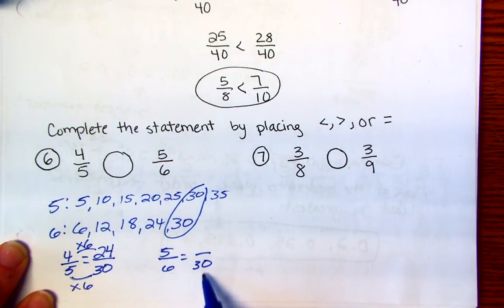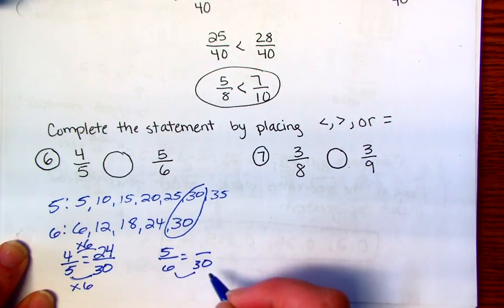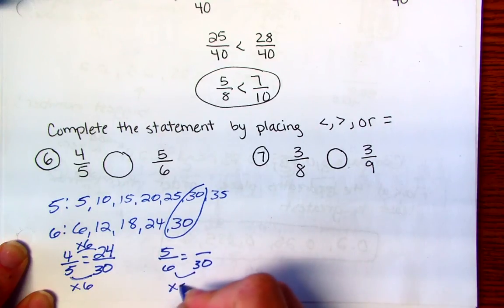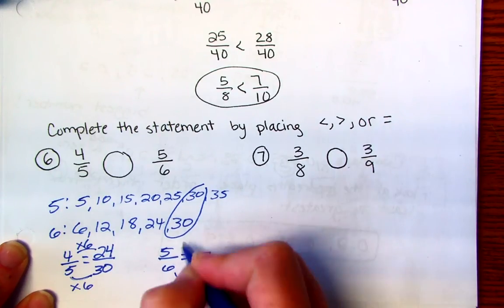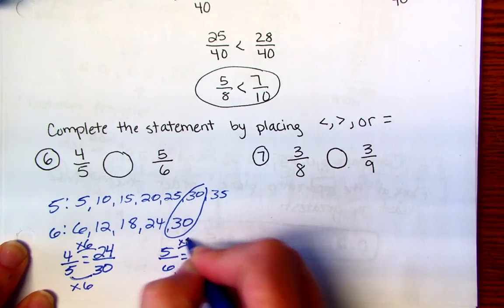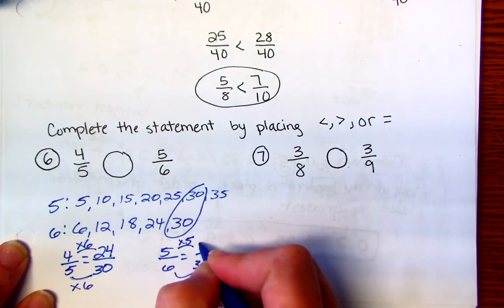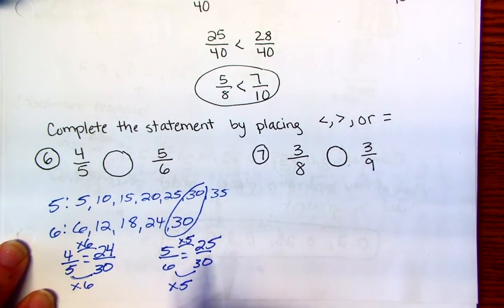And then 6 times what gives you 30? 5. And then if you multiply the bottom by 5, you better multiply the top by 5. So 5 times 5 is 25. Now that my denominators are the same, I can compare my numerators. So I can see that 24 is less than 25.